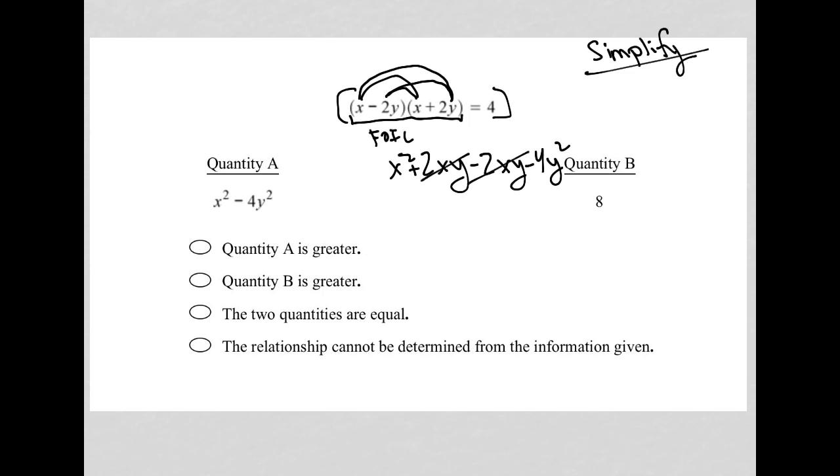These two middle terms cross out, 2xy minus 2xy is 0, leaving me with x squared minus 4y squared, which is a simplified version of the product of those binomials, equals to 4.